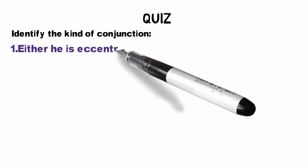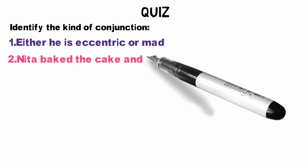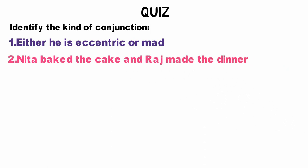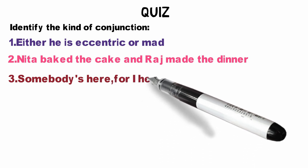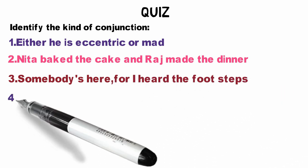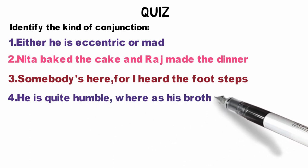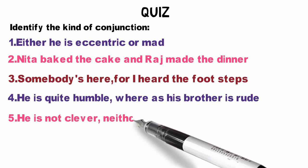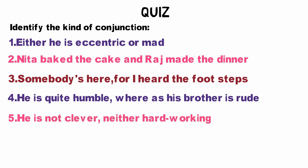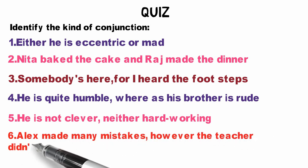First sentence: Either he is eccentric or mad. Second: Neeta baked the cake and Raj made the dinner. Next: Somebody is here, for I heard the footsteps. Next: He is quiet and humble, whereas his brother is rude. Next: He is not clever, neither hardworking. Next: Alex made many mistakes; however, the teacher did not punish him.